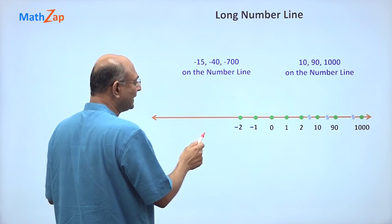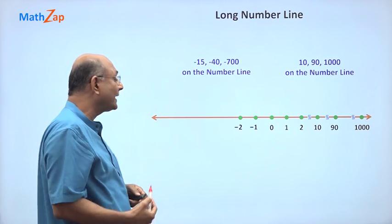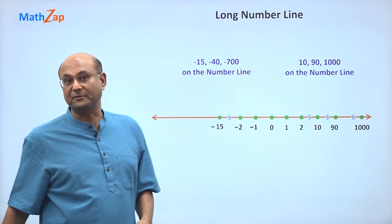So if I look at minus 15, minus 3, minus 4, minus 5, minus 15 is going to come to the left. So I put a break and then put minus 15.